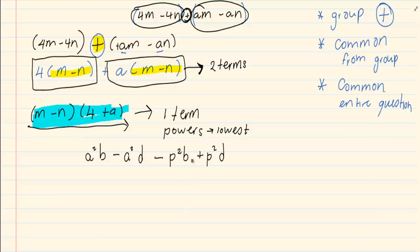Now, how do I decide what to group? If I look at each term in the expression, I will notice that in the first two terms, I got a squared. That's the same. In the third and fourth term, I got p squared. That's the same.